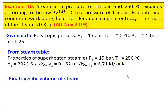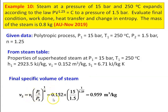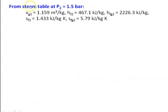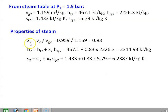Final volume of steam: V2 equal to V1 into P1 by P2 to the power 1 by N, which is 0.152 into 15 by 1.5 to the power 1 by 1.25 equal to 0.959 meter cube per kilogram. From the steam table at P2 equal to 1.5 bar: VG2 equal to 1.159 meter cube per kilogram, HF2 equal to 467.1, HFG2 equal to 2226.3 kilojoules per kilogram, SF2 equal to 1.433, SFG2 equal to 5.79 kilojoules per kilogram Kelvin. Dryness fraction X2 equal to V2 by VG2 equal to 0.959 divided by 1.159 equal to 0.83.